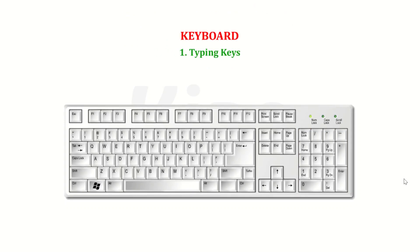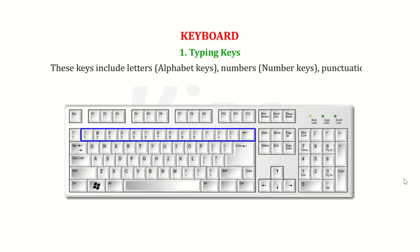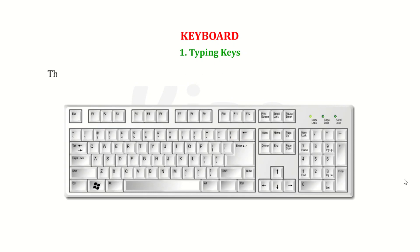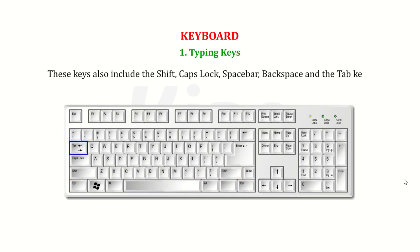Number 1 — Typing keys: These keys include letters, alphabet keys, numbers, punctuation like full stop, comma, colon, semicolon, single quote, double quote, and special symbols like plus, minus, dollar, etc. These keys also include the Shift, Caps Lock, Space Bar, Backspace, and Tab keys.